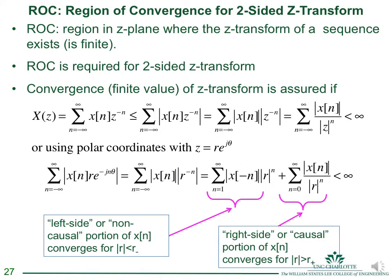We've seen that X(z) alone is not sufficient for the two-sided Z-transform — we must include the ROC. We'll now see an example where two different signals have the exact same X(z) form but different ROCs, illustrating why the ROC is necessary. This ROC requirement is a key feature of the two-sided transform, which is the most common in digital signal processing.